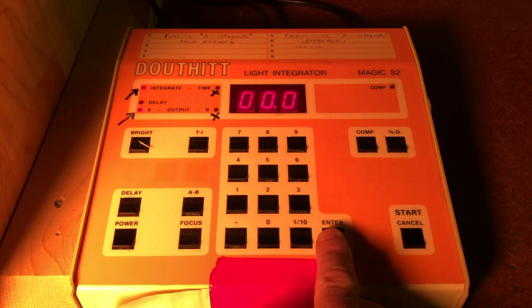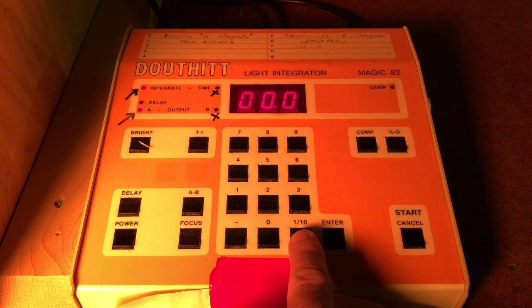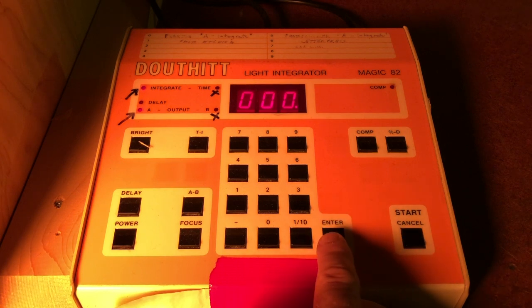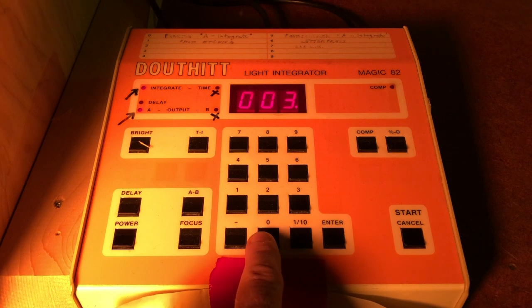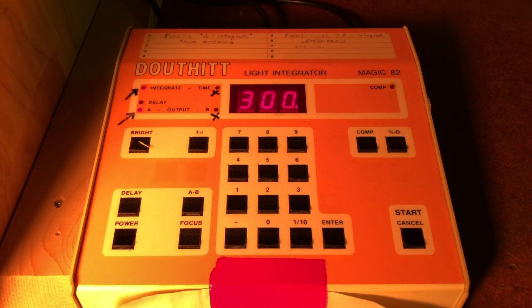When we want to reset the amount of light we're going to be using, in this case, we actually need 300 light units. You start by pushing the enter button and that will blank the display. In this case, we have to change the decimal place as well. So you hit the 1 over 10 fraction. And then hit the enter button again. And then hit any numbers you need in order to set the light. In this case, 300.